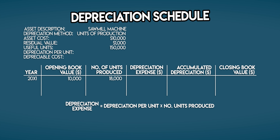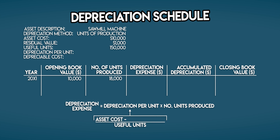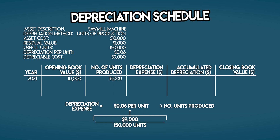Your depreciation expense is your depreciation per unit multiplied by your number of units produced. We can work out your depreciation per unit by taking your depreciable cost and dividing it by the total useful units. Depreciable cost is your asset cost minus residual value — it represents the portion of your sawmill machine that will depreciate over its useful lifetime. Your asset cost is $10,000 and its residual value is $1,000, so your depreciable cost is $9,000. Your sawmill machine can produce 150,000 useful units, so your depreciation per unit is $9,000 ÷ 150,000 = $0.06, or 6 cents per unit.